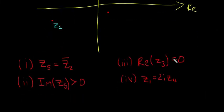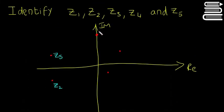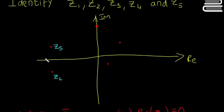Okay, the real part of Z3 is equal to zero, so we're going to look up, and that means that this one here is going to be Z3, because remember this is the real axis, so this is anything on this line here, anything on the imaginary axis, has a real part equal to zero.